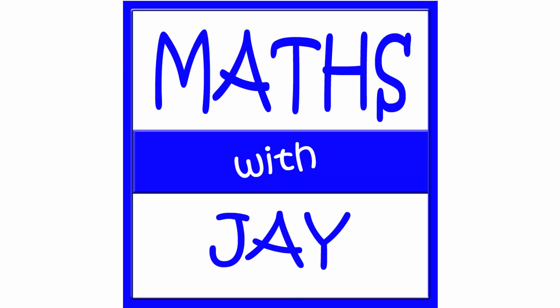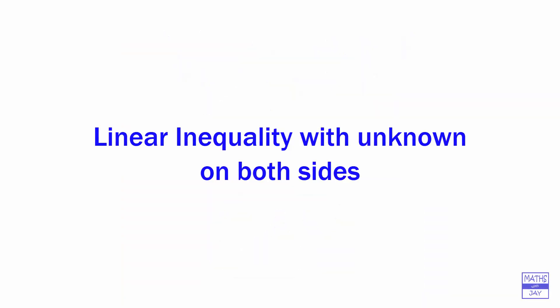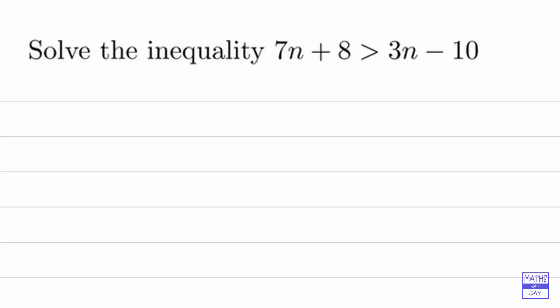Hello, welcome to Maths with Jay. Here we're solving an inequality where the unknown is on both sides. So we've got 7n plus 8 is greater than 3n minus 10.